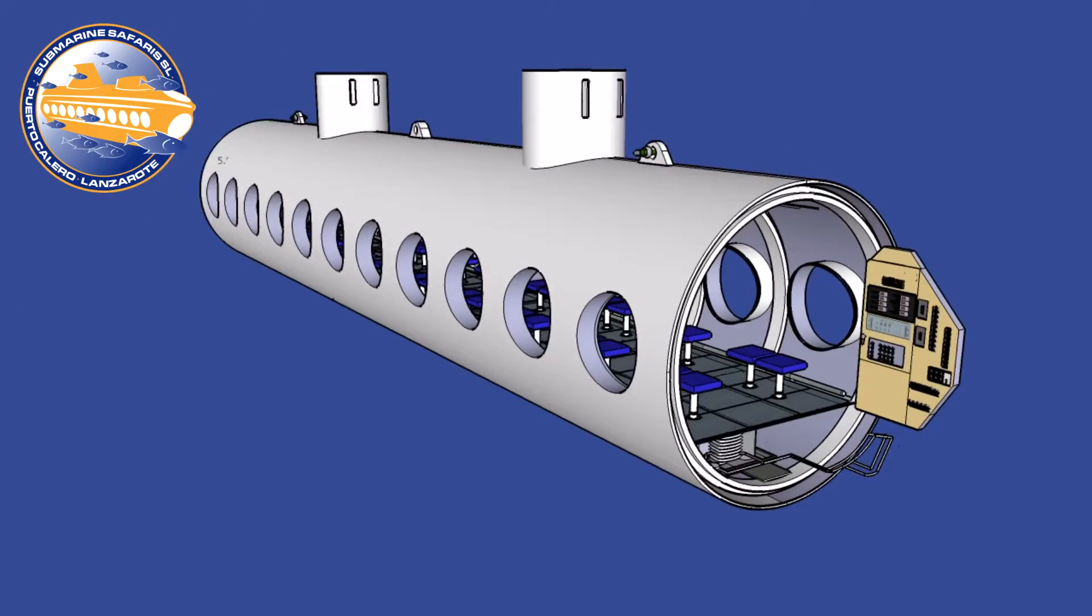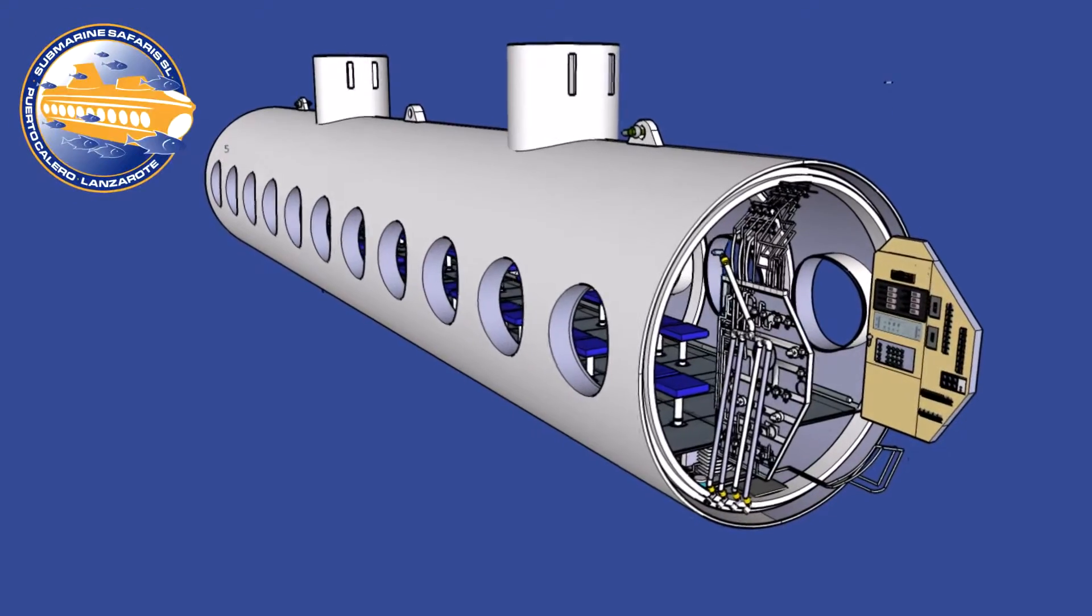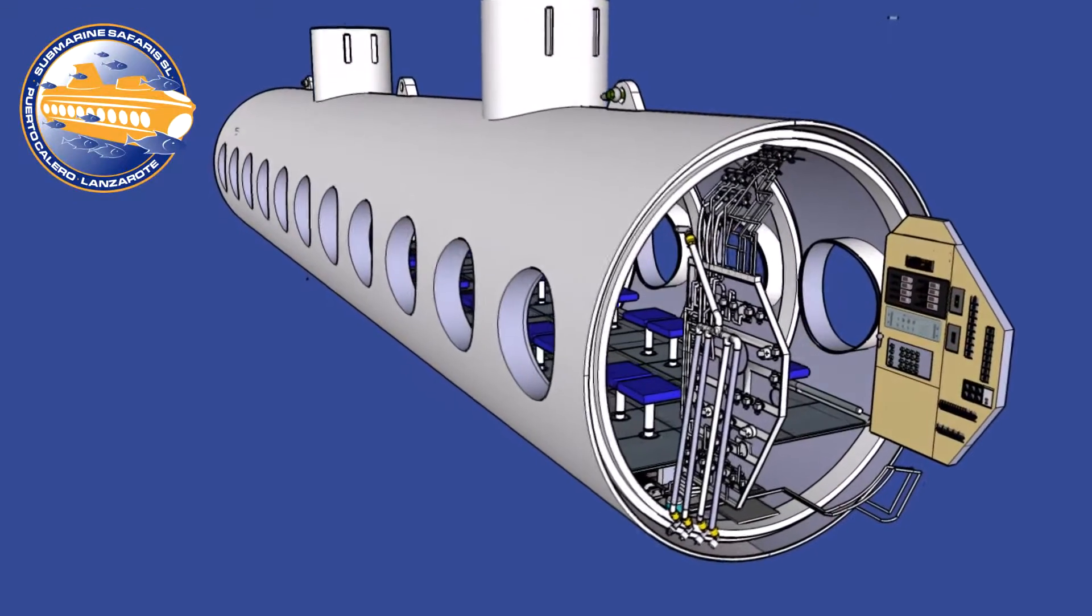Two lifting hooks are located forward and aft. These can be used to lift the submarine out of the water. The middle one is to lift to the surface only.